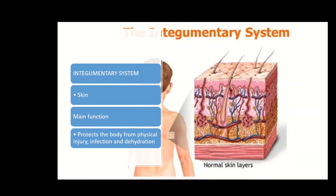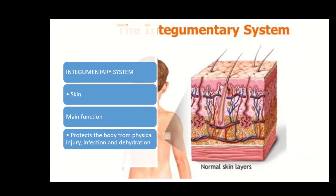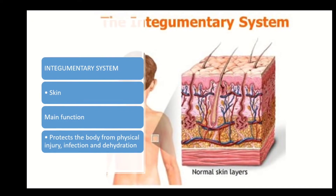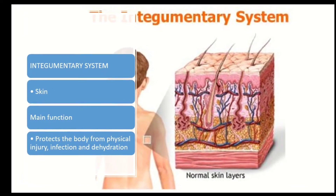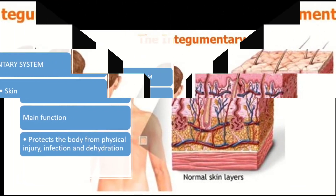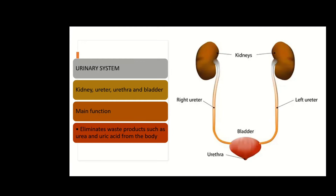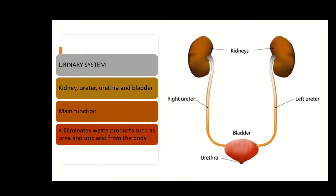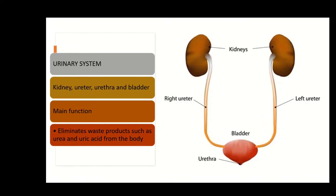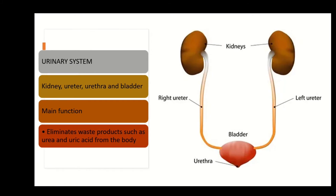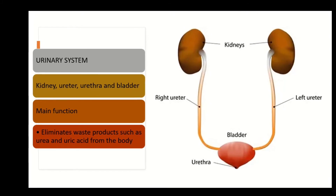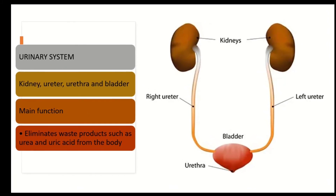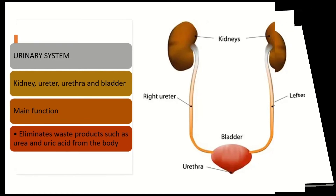The integumentary system consists of the skin. The main function is to protect the body from physical injury, infection, and dehydration. The urinary system consists of the kidney, ureter, urethra, and bladder. The function is to eliminate waste products such as urea and uric acid from the body.